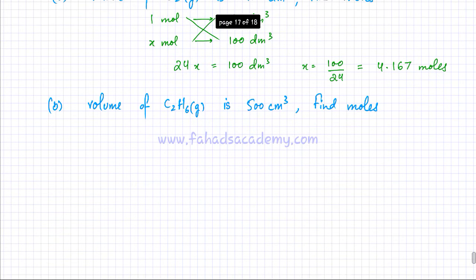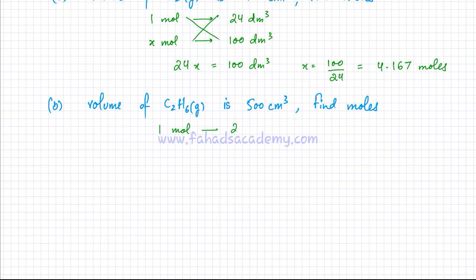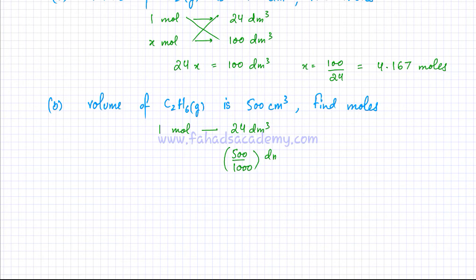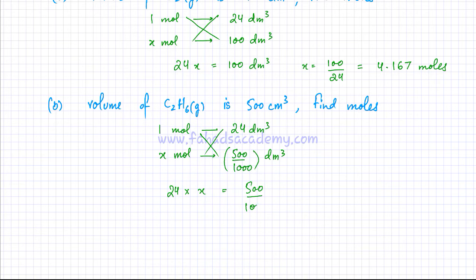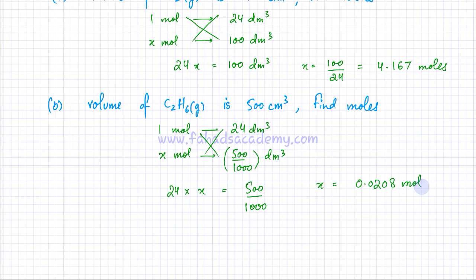Let's do another question: I have C₂H₆ gas and the volume given is 500 cm³. One mole of gas occupies 24 dm³, so I first need to convert 500 cm³ into dm³: 500 ÷ 1000 = 0.5 dm³. Then cross multiplying: 24x = 0.5, so x = 0.0208 moles, rounded to three significant figures.